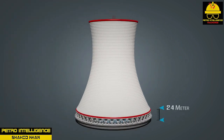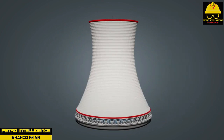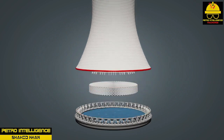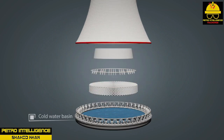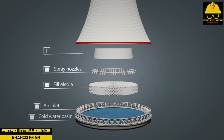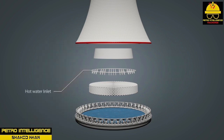The downward flowing water coats the fill and forms a film, thereby increasing the surface area for contact between the cool air and hot water. Hot water transfers heat to the cooler air it contacts in the tower. This process results in both sensible heat loss and evaporation. Sensible heat is heat that can be measured or felt.